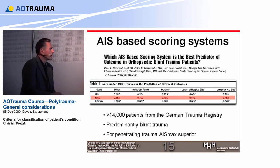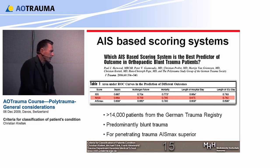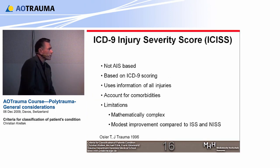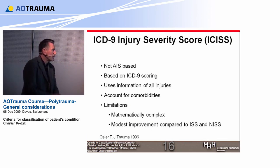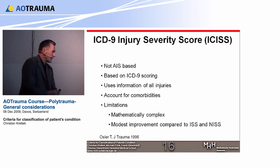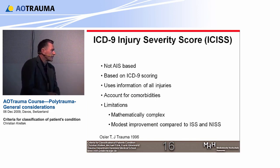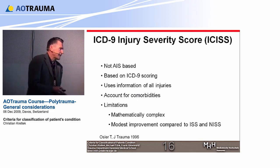A recent study from Peter Giannoudis' group compared ISS, new ISS, and AIS-MAX on a large patient population from the German Trauma Registry, predominantly blunt trauma. It found that for penetrating trauma, AIS-MAX is still a superior score. Regarding the ICD-9 injury severity score, which is not AIS-based: it includes information on all injuries and accounts for comorbidities neglected in ISS. However, it is relatively complex to obtain, and shows only a modest improvement compared to ISS and the new ISS.